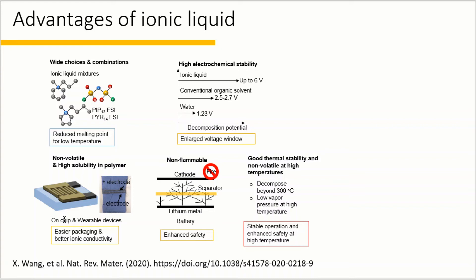A wide range of emerging energy storage technologies are also benefiting from the unique properties of ionic liquids. The high solubility of ionic liquids in polymers allows for the application of ionic liquids in gel electrolytes with good ionic conductivity. The ionic liquid-based gel electrolytes are promising and safe electrolytes for the textile industry due to their non-volatility and non-flammability. Also, because the ionic liquid is non-flammable, it can enhance the safety of metal batteries.